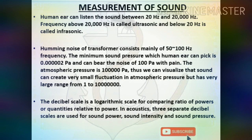Measurement of sound: the human ear can listen to sound between 20 Hz and 20,000 Hz. Frequency above 20,000 Hz is called ultrasonic and below 20 Hz is called infrasonic. The humming noise of a transformer consists mainly of 50 to 100 Hz frequency. The minimum sound pressure the human ear can detect is 0.00002 Pascal, and it can bear noise of 100 Pascal with pain. The atmospheric pressure is 100,000 Pascal, showing that sound creates very small fluctuations in atmospheric pressure but has a very large range. The decibel scale is a logarithmic scale for comparing ratios of powers. In acoustics, three separate decibel scales are used for sound power, sound intensity, and sound pressure.